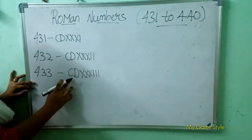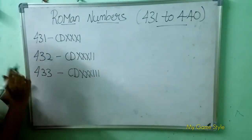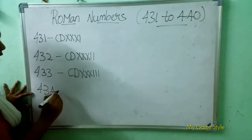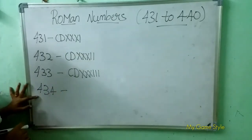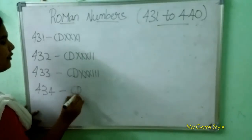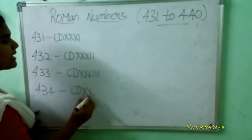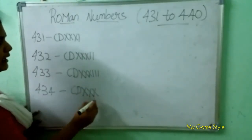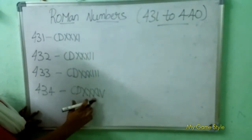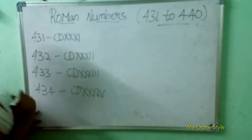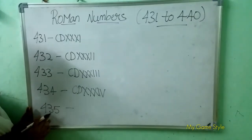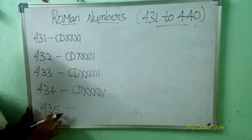Triple I is 3. So this means 433. Next, 434 — how to write 434? CD is 400, triple X is 30, IV is 4. So this means 434.